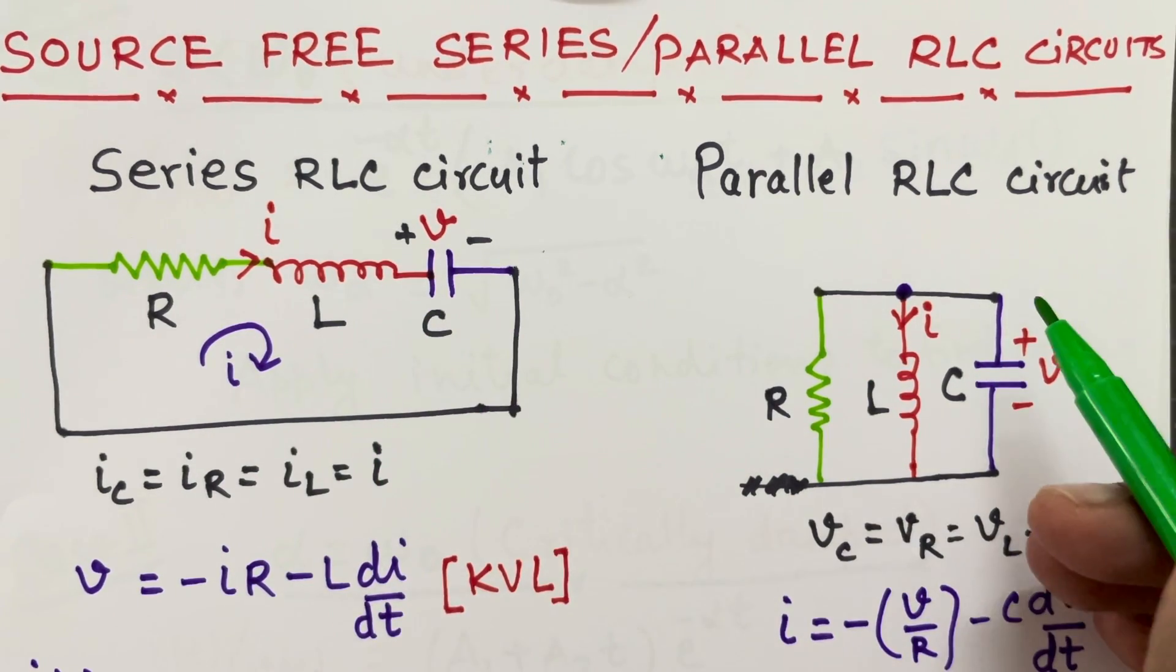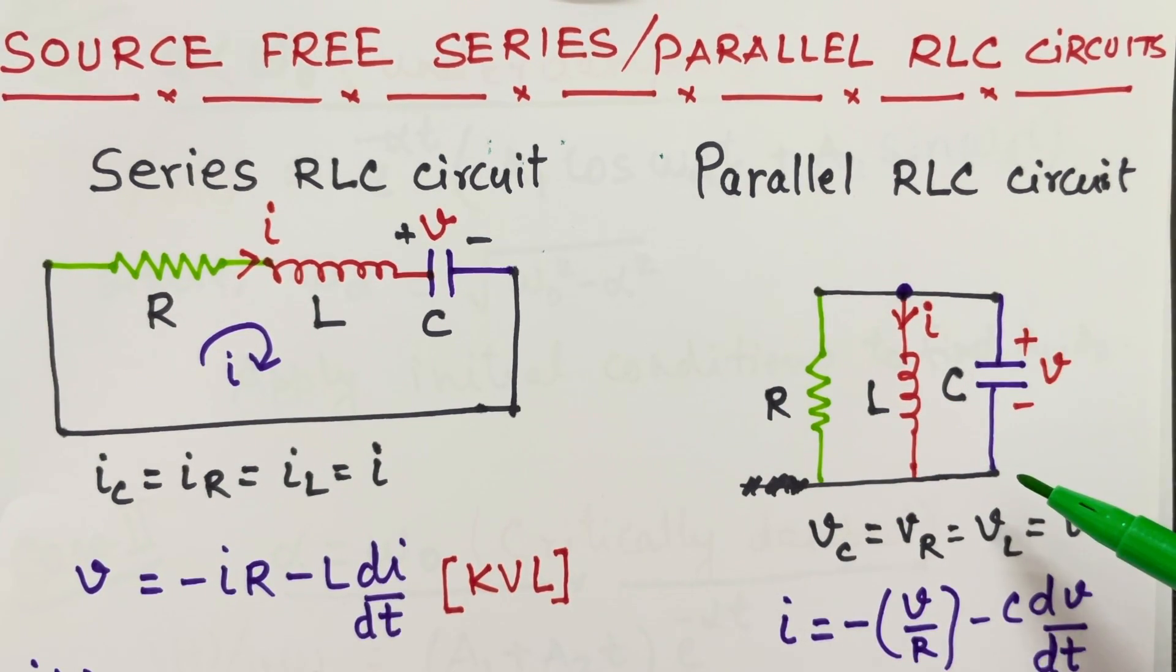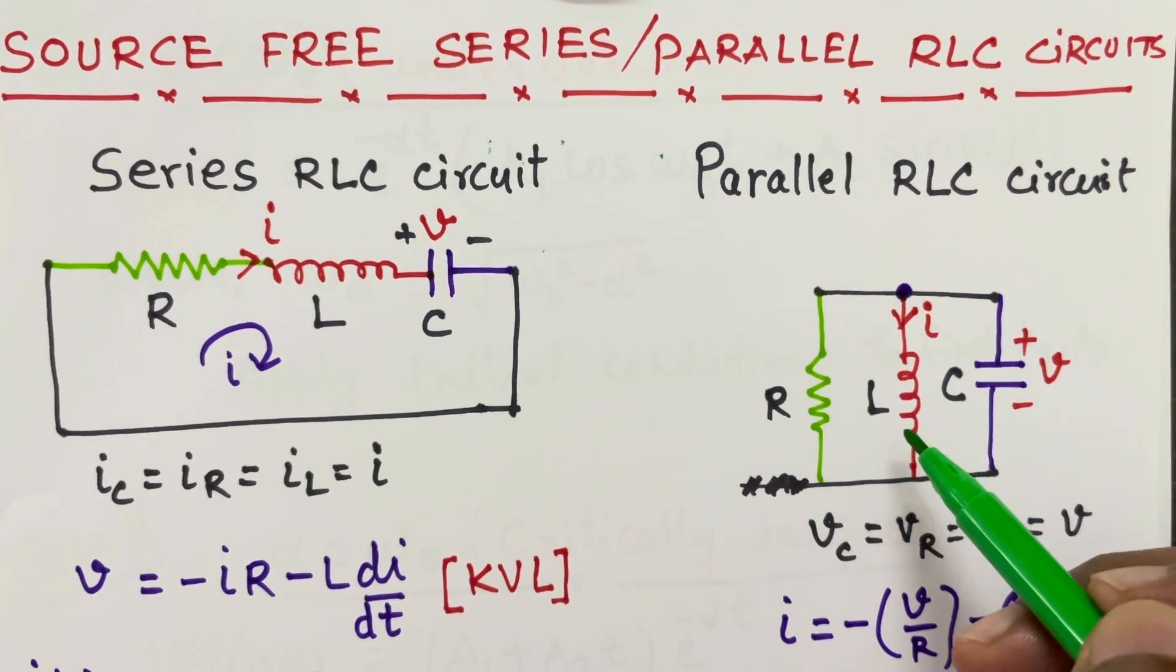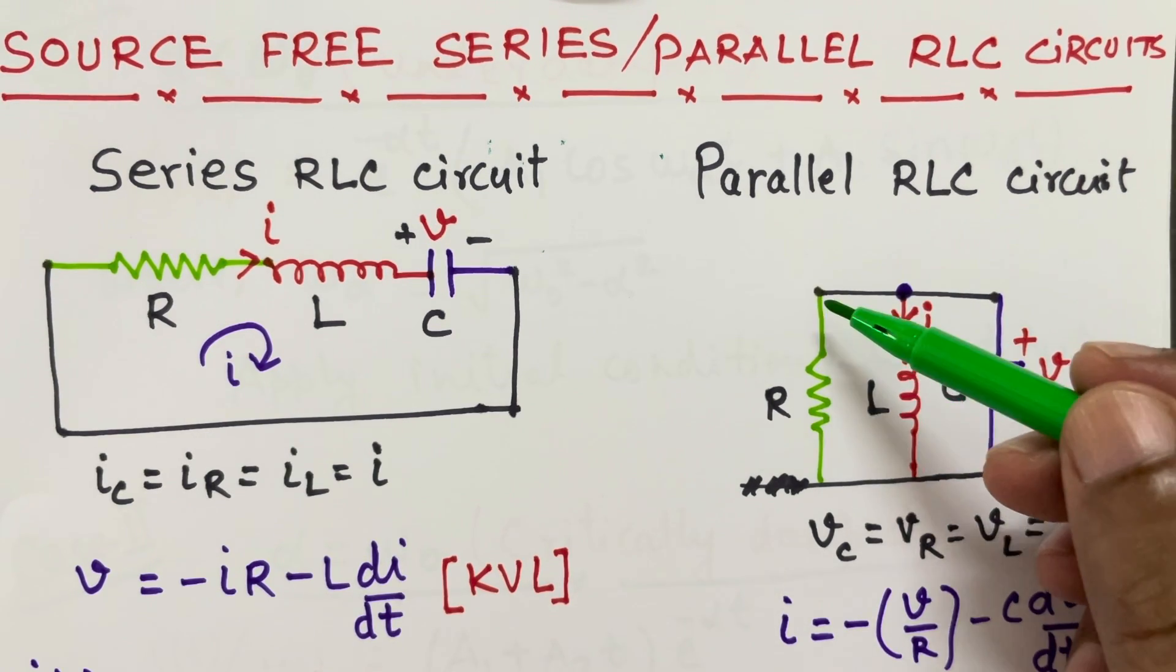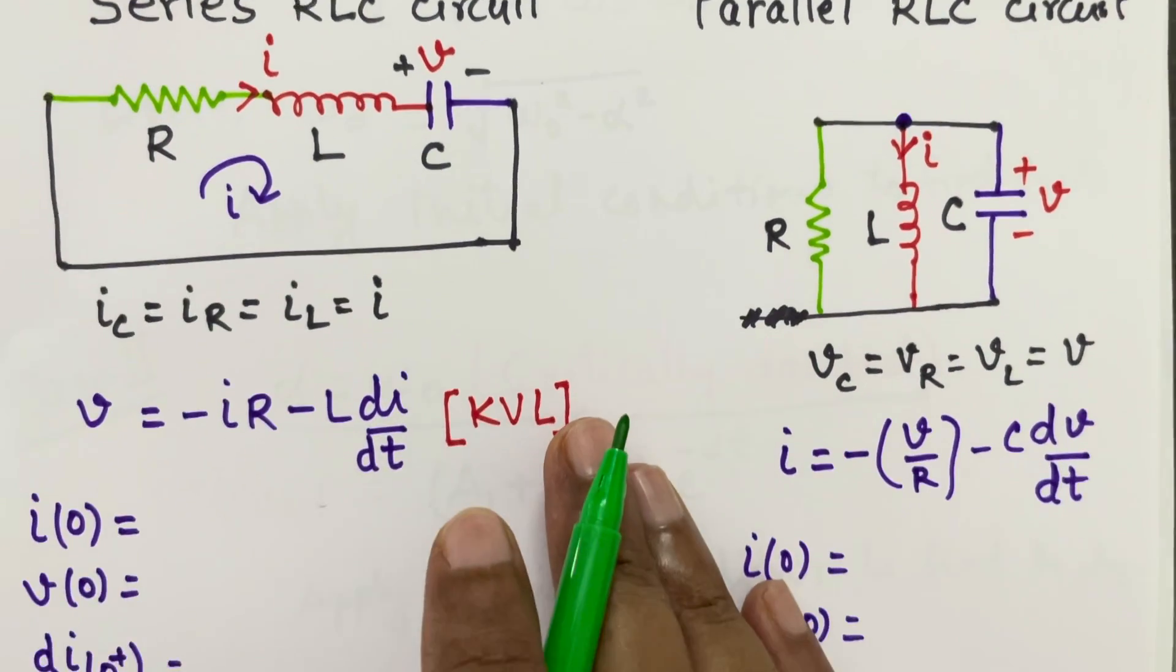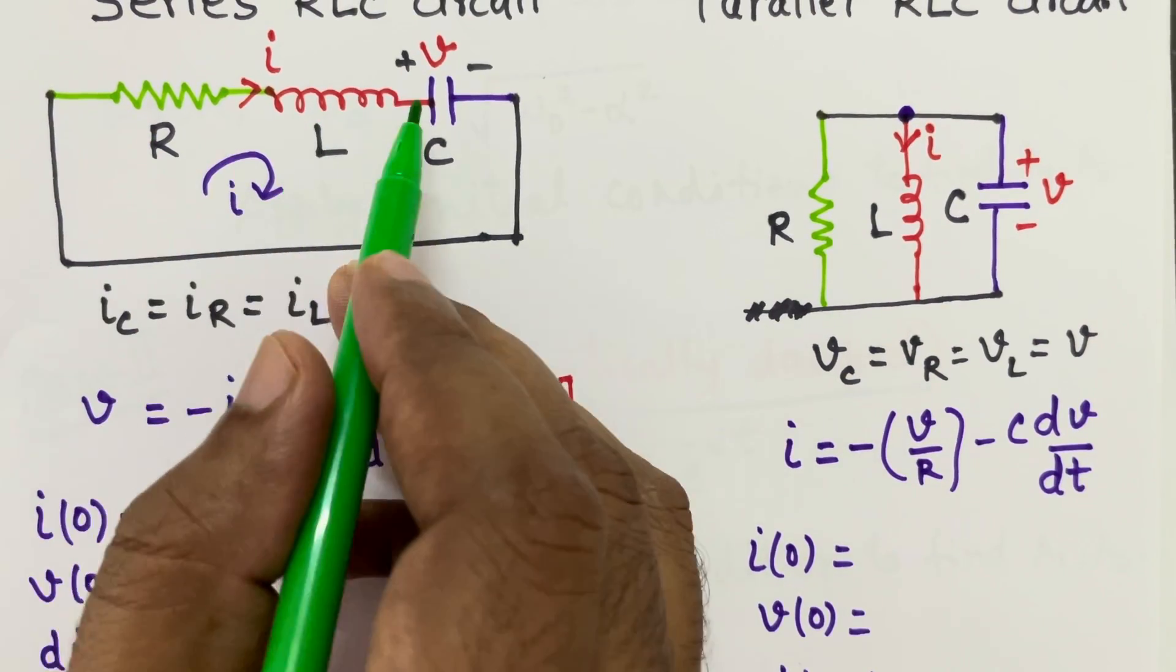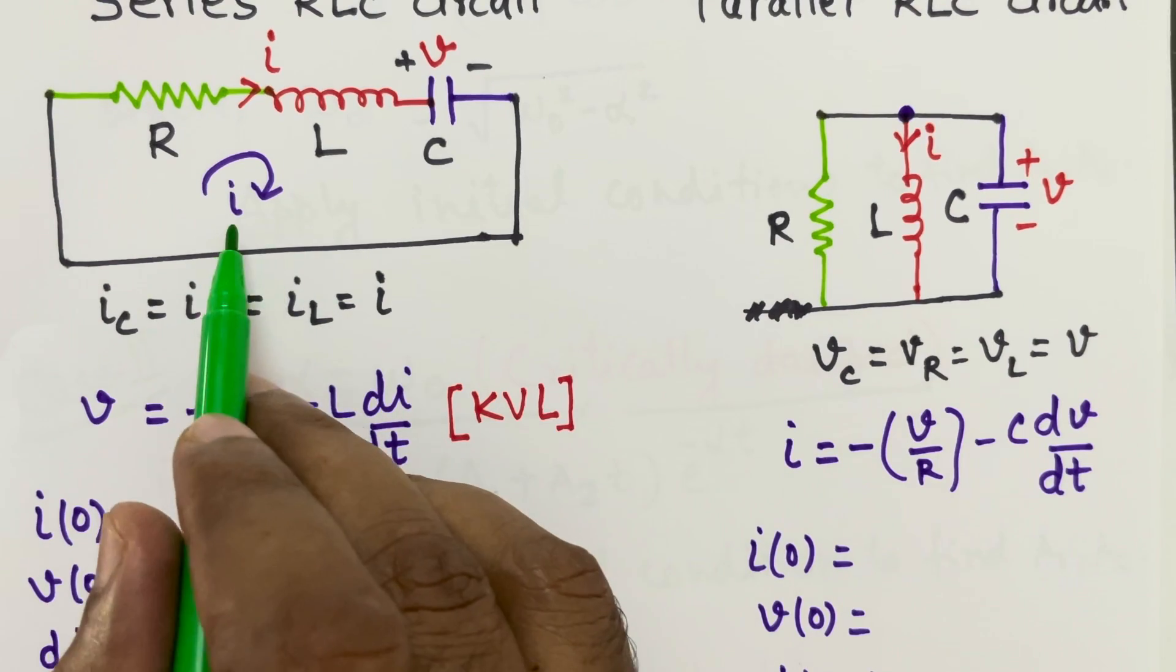Same way in the parallel RLC circuit, we have R, L and C in parallel and we have to solve for either current through the inductor or voltage through the capacitor. Here you can notice the voltage across the capacitor is same as voltage across the inductor and voltage across the resistance. Now, here in the series circuit all the currents IC, IL and IR will be same and that is equal to I.